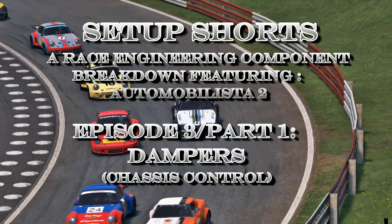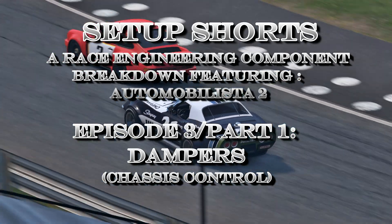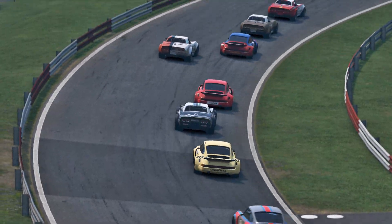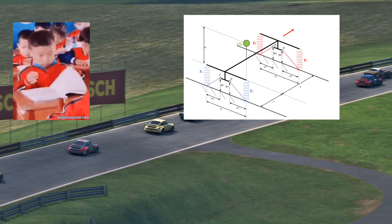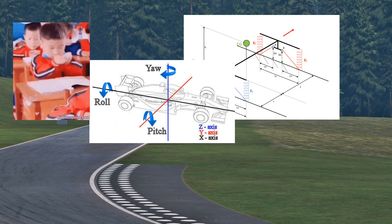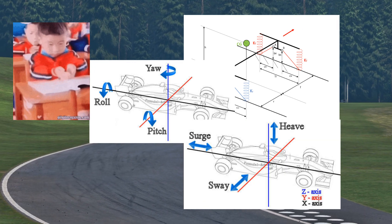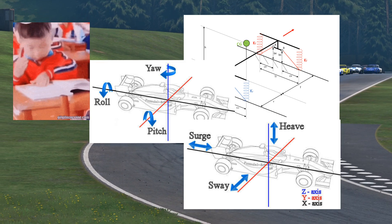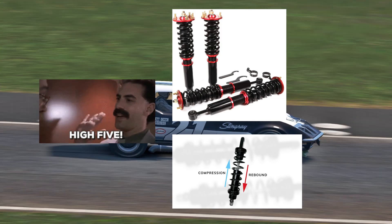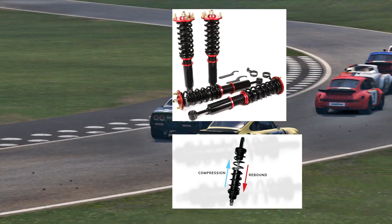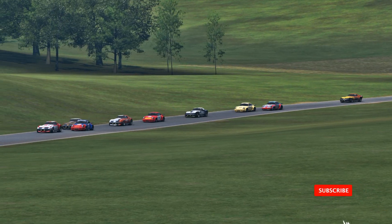If you have watched episodes 1 and 2, you know that springs and ARBs help us control the stiffness of the car and how that can affect handling characteristics. Dampers allow us to control this on an individual wheel basis. On a mechanical level, dampers work hand-in-hand with each spring to control the compression and decompression of that spring.